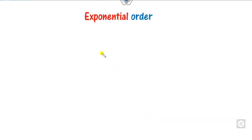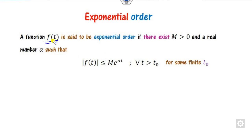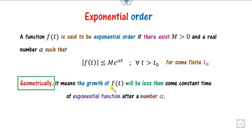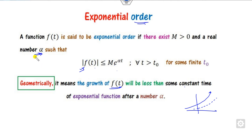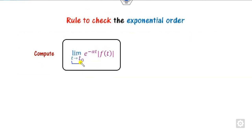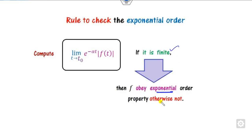The second property is exponential order. A function f(t) is said to be of exponential order if it can be bounded as shown: for any real number t₀, the growth of f(t) should be less than some constant M times an exponential function e^(αt) over that domain. If any function satisfies this, we call it of exponential order alpha. The rule is: always try to compute the limit as t approaches infinity of e^(-αt)|f(t)|. If this is finite, then we say it is of exponential order; otherwise not.